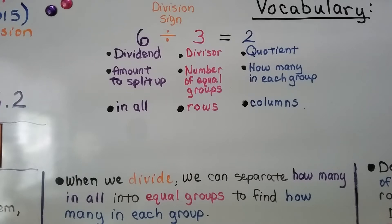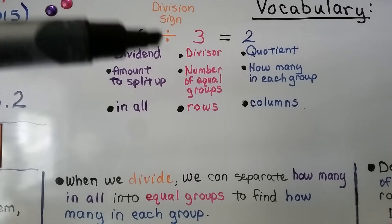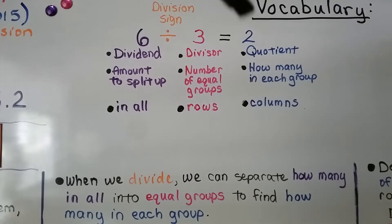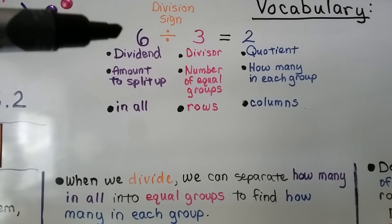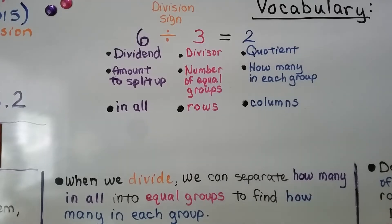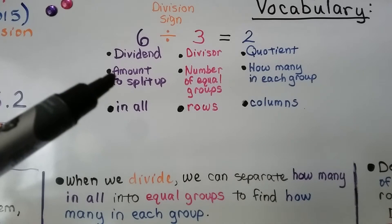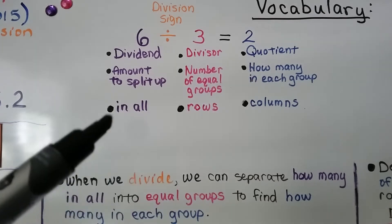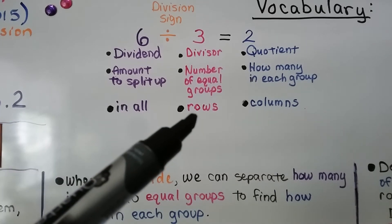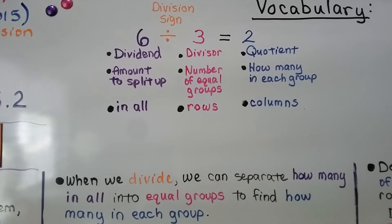When we divide, we separate how many in all into equal groups to find how many in each group. We have 6 divided by 3 equals 2. We're going to learn that the 6 is called the dividend, the 3 is called the divisor, and the 2 is called the quotient — that's the answer. It's the amount to split up, the number of equal groups, and how many in each group — how many in all, the rows, and the columns.